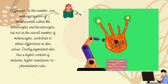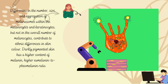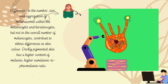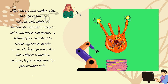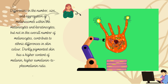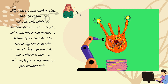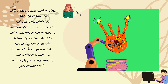The difference in number, size, and aggregation of melanosomes within the melanocytes and keratinocytes — but not in the overall number of melanocytes — contributes to ethnic differences in skin color. Darkly pigmented skin has a higher content of melanin and a higher eumelanin to pheomelanin ratio. Different skin colors are due to differences in the number, size, and distribution of melanosomes, and differences in the proportions of eumelanin and pheomelanin.